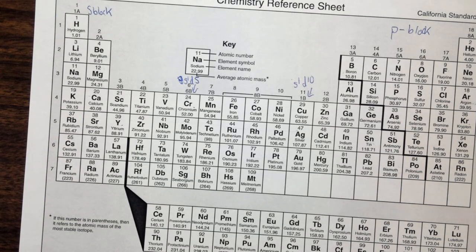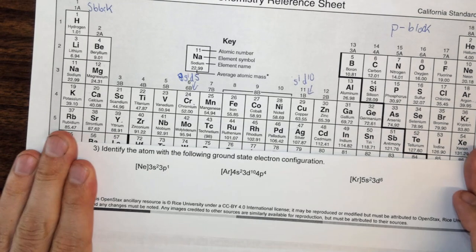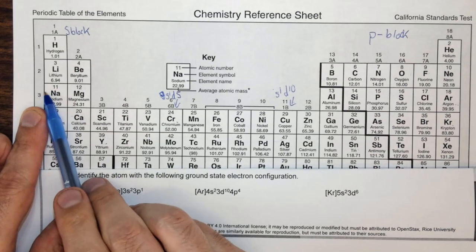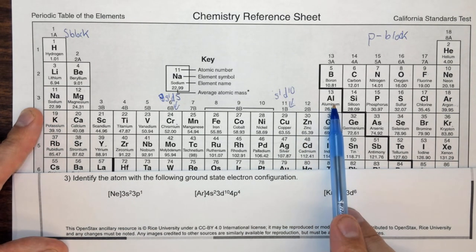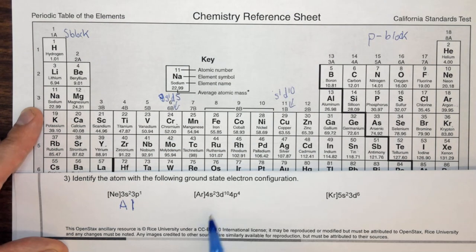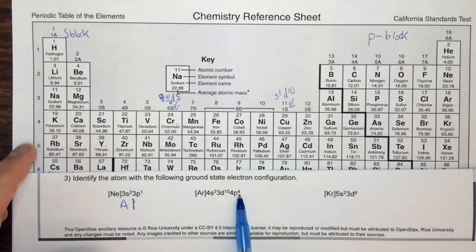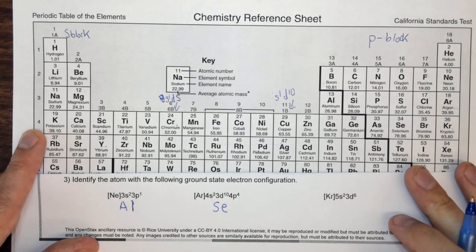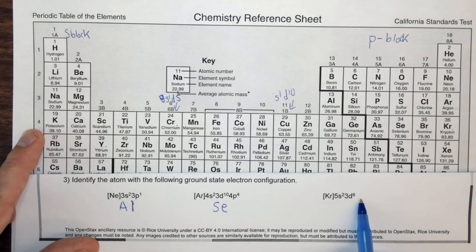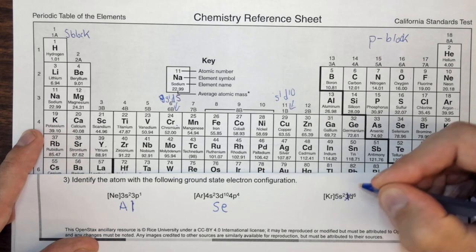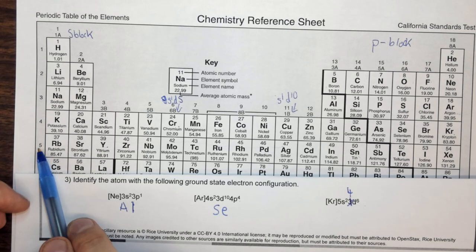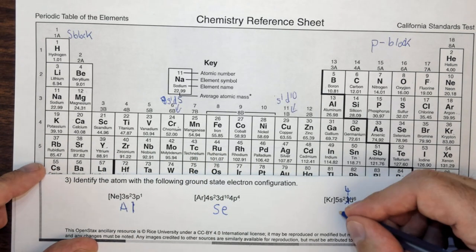We can also go the other direction — finding the atom from its electron configuration. [Ne] 3s² 3p¹: go to period 3, the p block, count over 1 — that's aluminum. [Ar] 4s² 3d¹⁰ 4p⁴: go to period 4, p block, count over 4 — that's selenium. [Kr] 5s² 4d⁶ (note: the 3d⁶ in the transcript is a typo; it should be 4d⁶): go to period 5, d block, count over 6 — that's ruthenium.